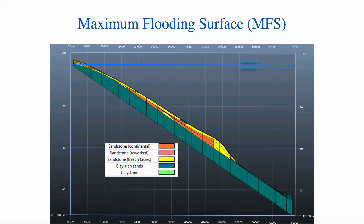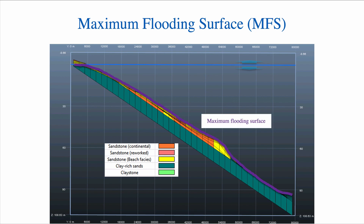Eventually we'll reach a point where base level is at its maximum, and that is known as the maximum flooding surface. The maximum flooding surface is very important — it's a key surface. It marks the base of the high stand system tract and the top of the transgressive system tract, or the TST.